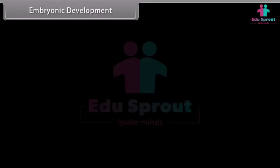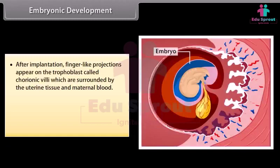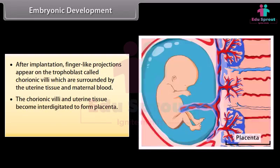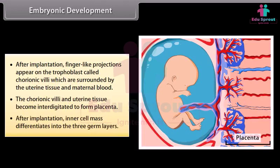After implantation, finger-like projections appear on the trophoblast called chorionic villi, which are surrounded by uterine tissue and maternal blood. The chorionic villi and uterine tissue become interdigitated to form the placenta. The inner cell mass differentiates into three germ layers.